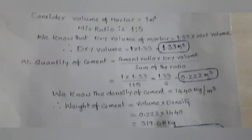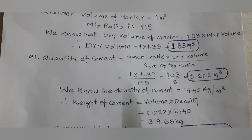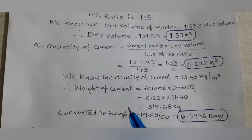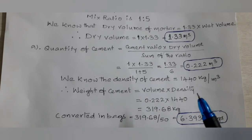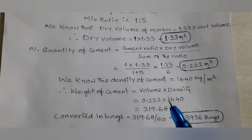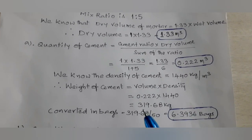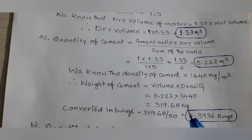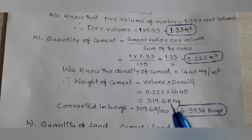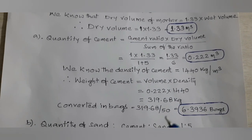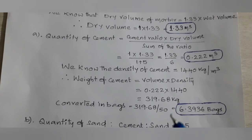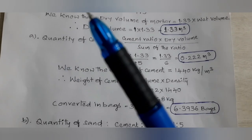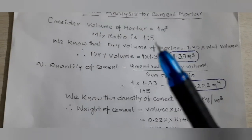0.222 cubic meters of cement is required. To convert into kilograms and bags, we use the density of cement equal to 1440 kg per cubic meter. Weight of cement equals volume into density, so 0.222 into 1440 equals 319.68 kg. Converting into bags, since one bag equals 50 kg, we get 319.68 divided by 50 equals 6.3936 bags of cement required for 1 cubic meter of mortar at 1:5 ratio.